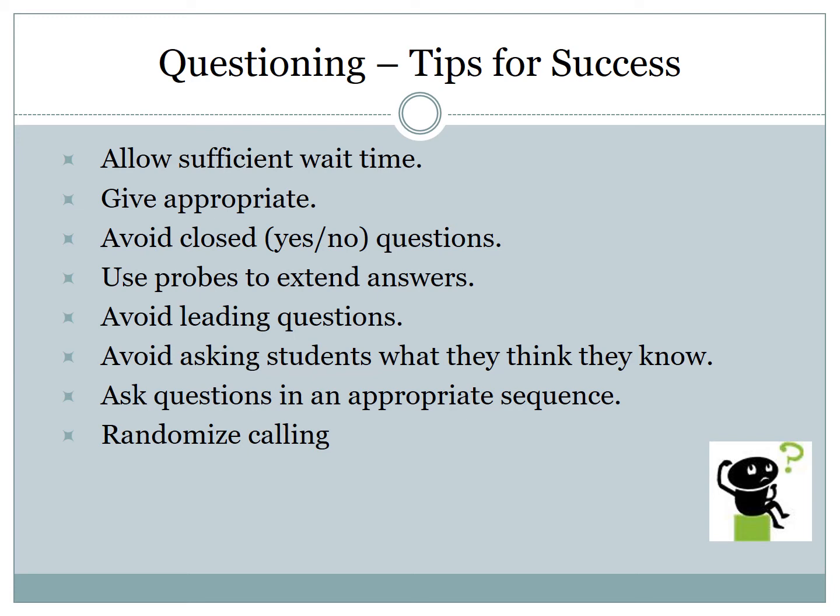Avoid asking students what they think they know — things like 'Is everybody with me?' because no one's going to admit they're not. Ask students questions in an appropriate sequence: generally go from the general to the specific, not from the specific to the general — introduce the topic, ask general questions, then get more specific. Finally, use randomized calling. Without a system, we tend to call on students who raise their hands, and the same students get called on repeatedly. If we randomize — some teachers put names on slips of paper — we more frequently give all students practice answering, and students stay on their toes.